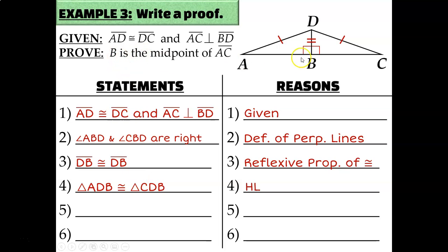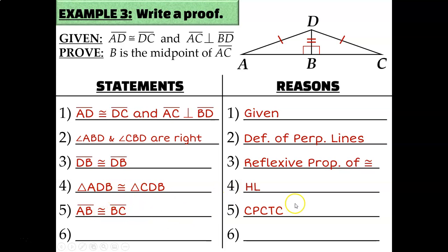What we're actually trying to show is that B is the midpoint of AC. For a point to be a midpoint, it must divide a segment into two congruent segments. Do I know AB and BC are congruent? Yes — they're corresponding parts of congruent triangles. A and B are the first and last letters of one triangle; B and C are the first and last letters of the other — corresponding sides of two congruent triangles, so they're congruent by CPCTC. Therefore B is the midpoint of AC by the definition of midpoint.